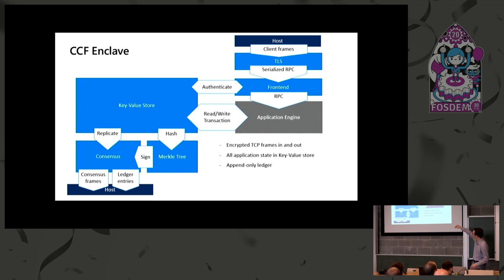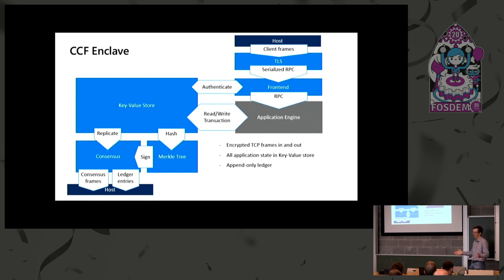Further downstream, we replicate using consensus — encrypted frames go back out to the host and to the ledger for permanent storage. At regular intervals we hash all transactions, put them in a Merkle tree, sign it, and that goes to our ledger. This is how we get our tamper-proof audit log. We have encrypted TLS frames coming in and out, an append-only ledger on disk, and all application state must be in the key-value store for all guarantees to hold.